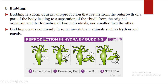Next is budding. Budding is a form of asexual reproduction that results from the outgrowth of a part of the body, leading to a separation of the bud from the original organism and formation of two individuals — one smaller than the other. In this picture you can see the example of hydra. A small outgrowth develops from the parent body and grows in size; this is known as a bud. When this bud is separated from the main body, it can survive independently as an individual. Common examples are some invertebrates such as hydra and corals.